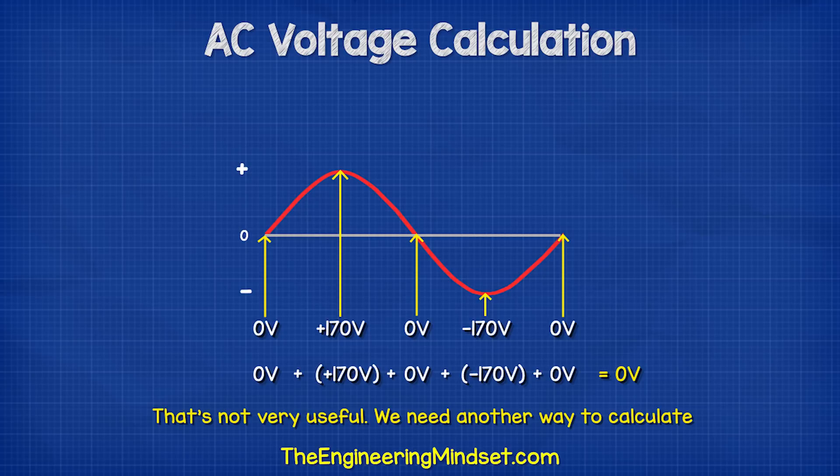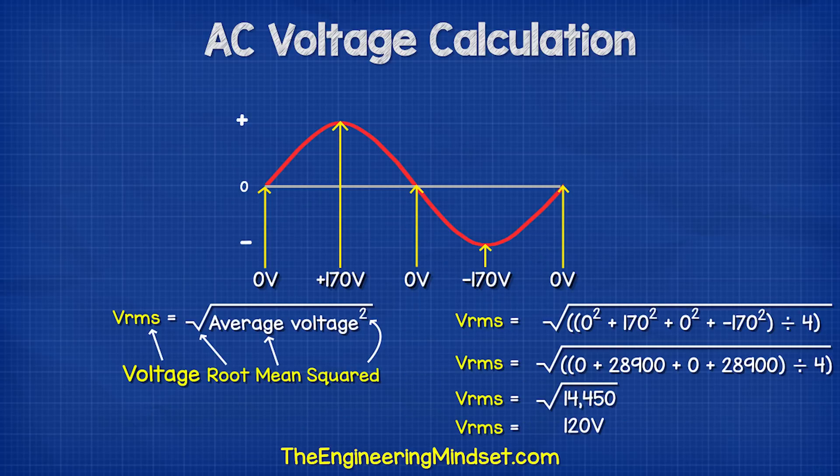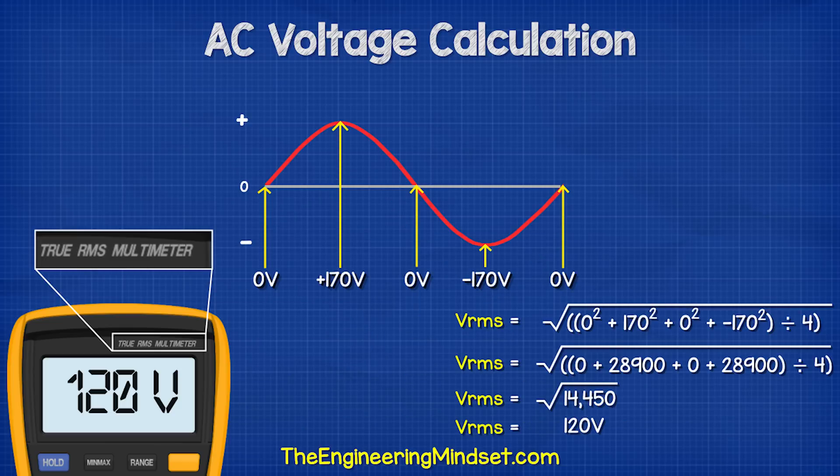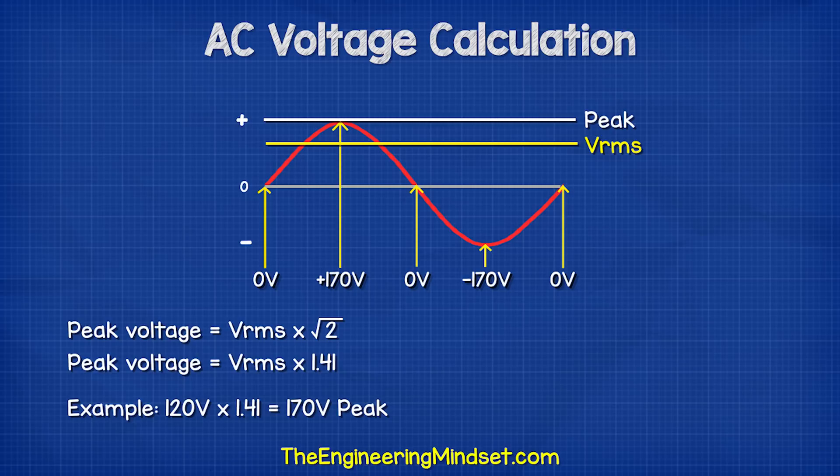That's not very useful, so a clever engineer decided to use the root mean squared voltage. That is what our multimeters calculate when we connect them to the electrical outlets.